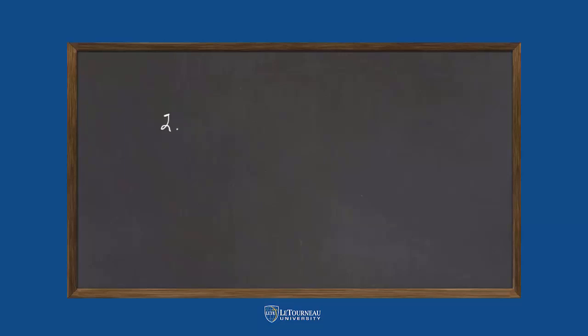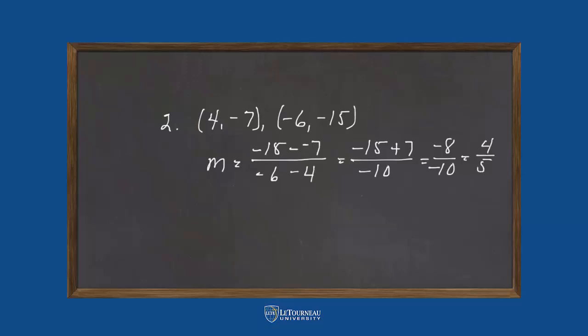Let's look at another slope. How about (4, -7) and (-6, -15). Again, subtract the y's, subtract the x's, be very careful of your signs, we get -15 plus 7 over -10, which gives us -8 over -10, or 4 fifths.